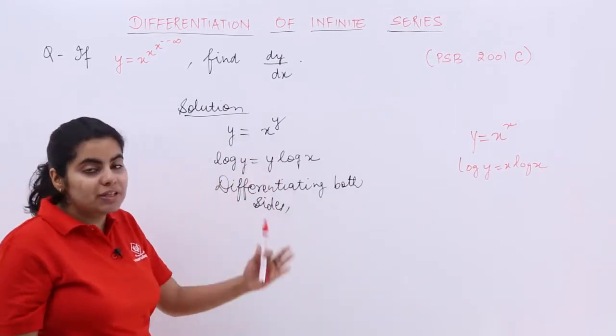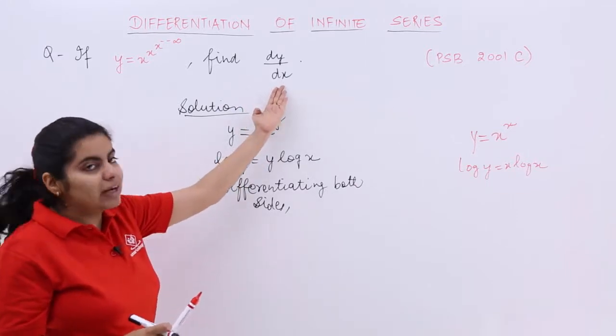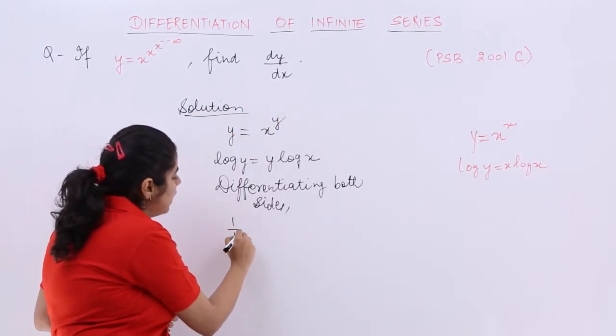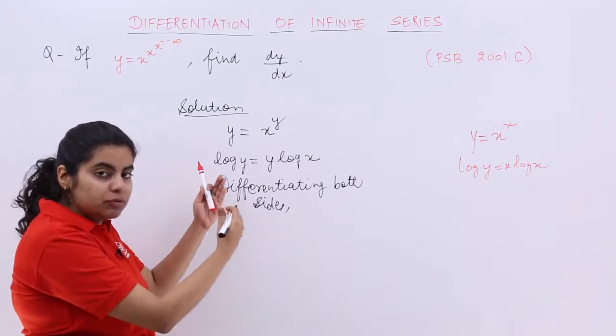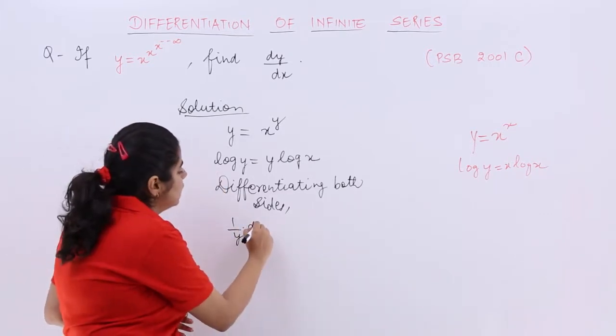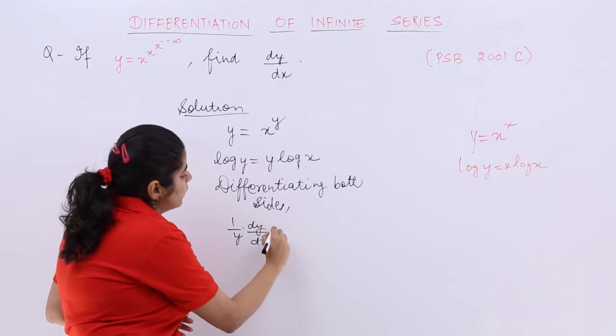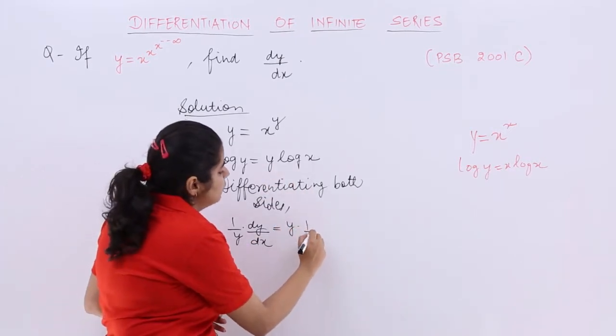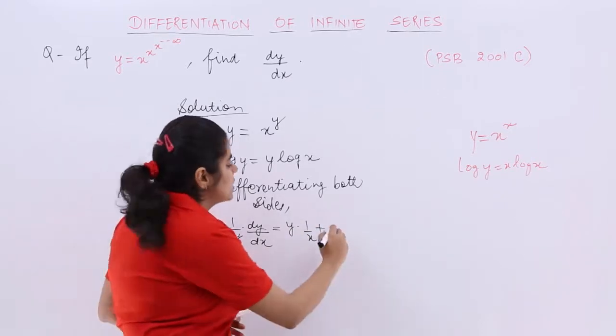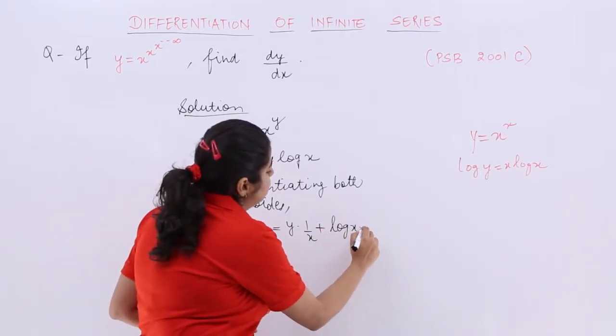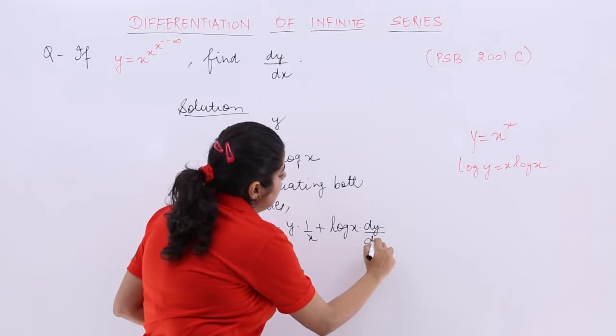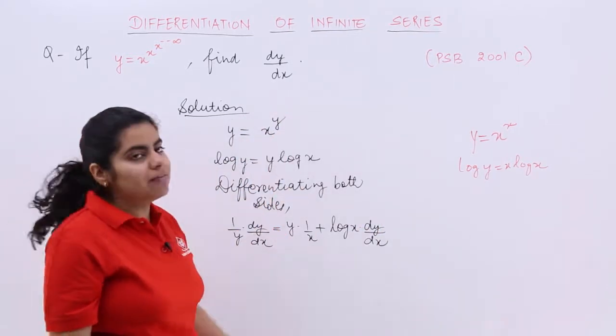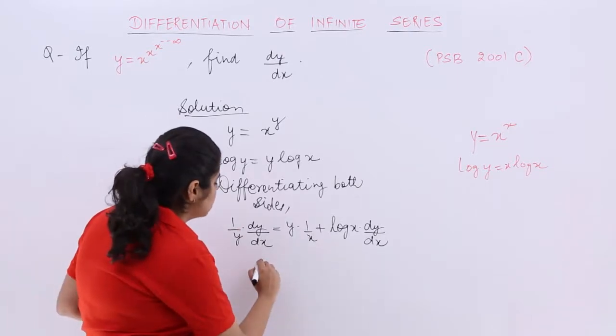So I write with respect to what? Because you have to find dy by dx, so differentiate with respect to x only. So it is 1 by y, because log's differentiation is 1 by something, dy by dx is equal to here. You have 2 terms. Let's take the product rule. First term as it is, differentiation of the second, plus second term as it is, differentiation of the first. You see that y's differentiation is dy by dx. You have to find out dy by dx. Let's take out dy by dx common.